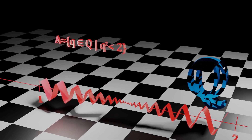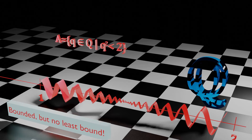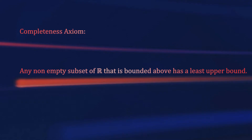The rational numbers are not complete — we have gaps that correspond to the irrational numbers. In order to include the irrational numbers, we introduce the axiom of completeness. This axiom guarantees that, for any non-empty set of real numbers that is bounded above, a supremum exists. This is what differentiates the rational from the real numbers.